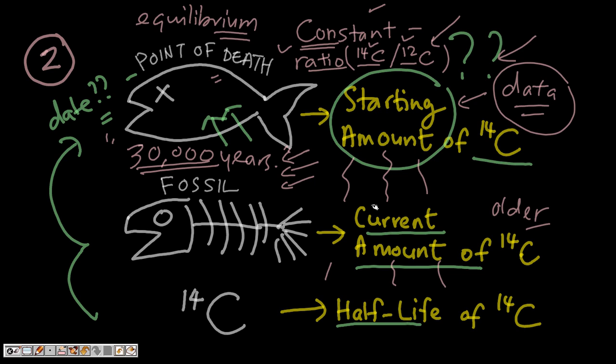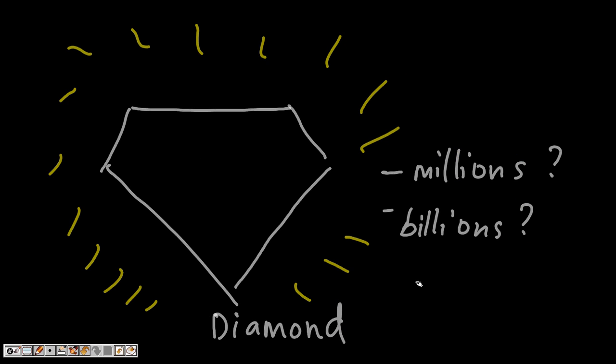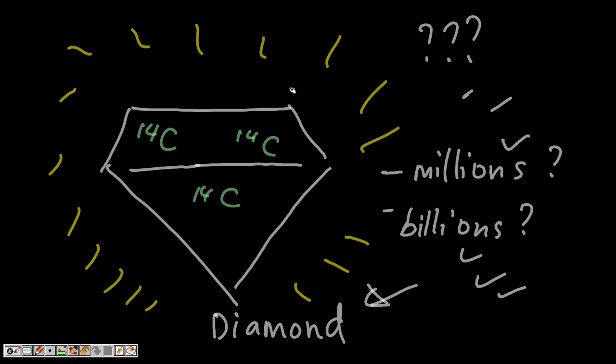One final evidence: diamonds. The hardest known substance, extremely resistant to contamination, they are estimated by secular scientists to be in the range of millions to billions of years old. Now that's the assumption of the age of diamonds. But guess what we have discovered now? We have discovered carbon-14 in diamonds. Now what does this mean? Carbon-14 still in diamonds!